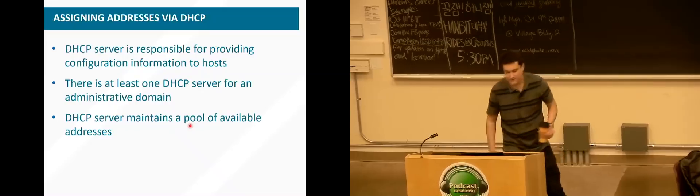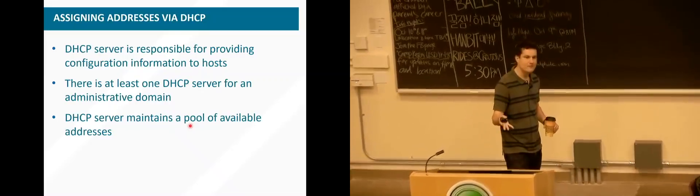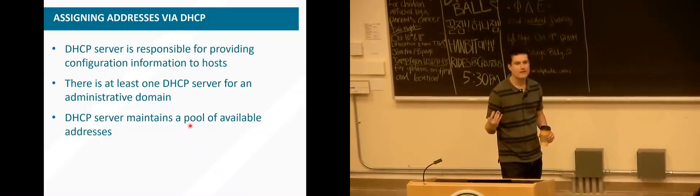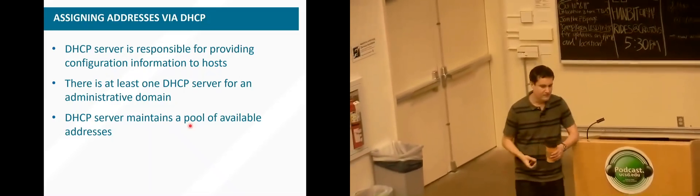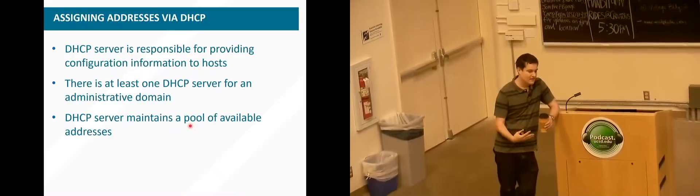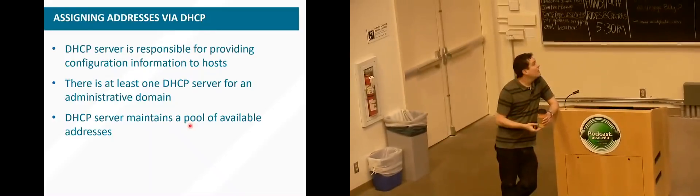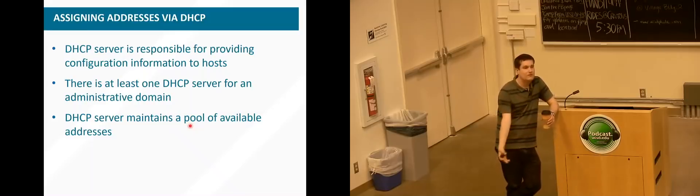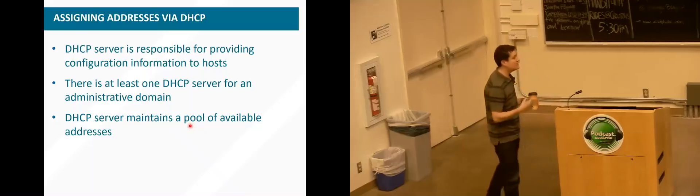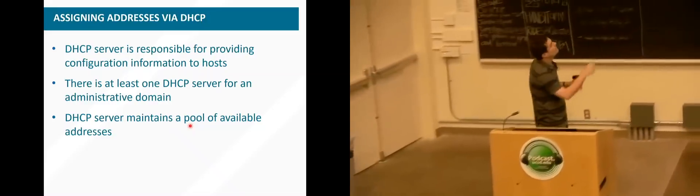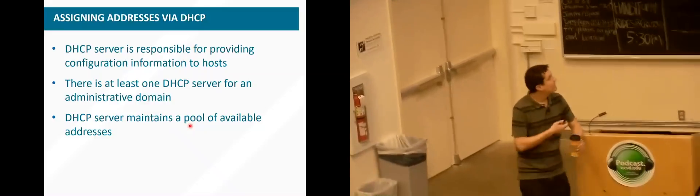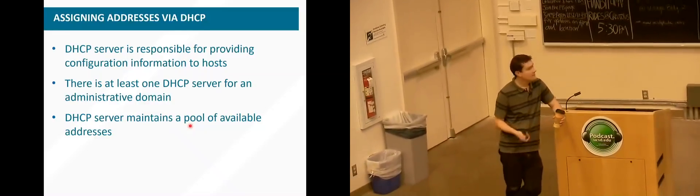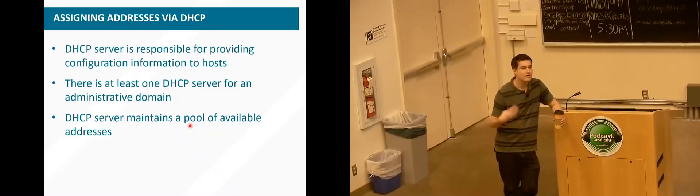Let's talk about how these addresses get assigned. Originally, you had to register every time you plugged a computer into the wall — you had to get some administrator to assign an address to you. That's extremely inconvenient. So there's a protocol called DHCP that will assign an IP address to a host that enters the network. Whenever you join the network — open your laptop or phone on campus and connect to Wi-Fi — you need an IP address, and this protocol will actually assign that to you.